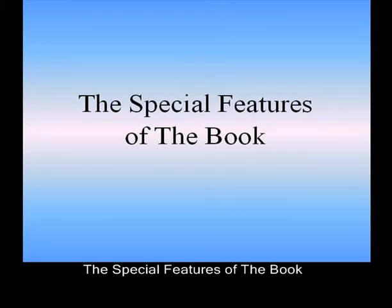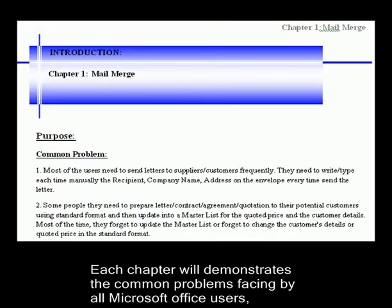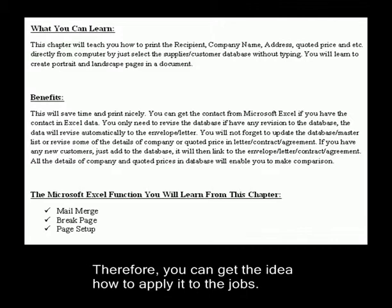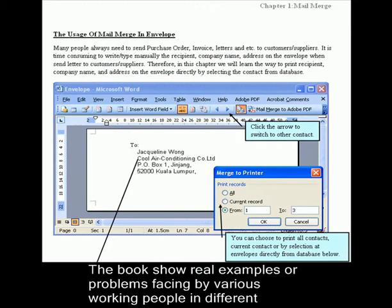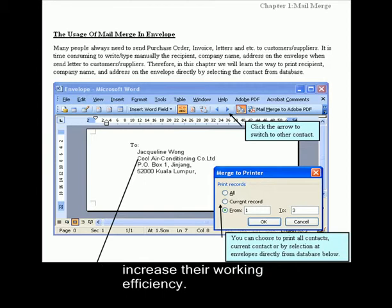The Special Features of the Book. Feature 1: Each chapter will demonstrate the common problems faced by all Microsoft Office users, what you can learn from each chapter, the benefits you can earn from the improvement, and how to apply it to your jobs. Feature 2: The book shows real examples and problems faced by various working people in different departments or fields, so it is useful for all groups of working people to apply in their jobs to increase their working efficiency.